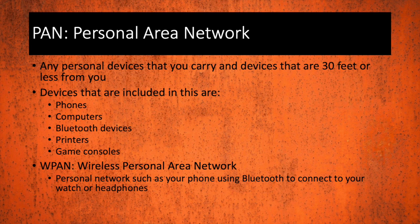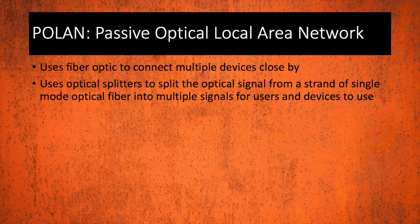POLAN is a passive optical local area network. POLANs use fiber optic cables to connect multiple devices that are close by. They also use optical splitters to split optical signals or light from a strand of single-mode optical fiber into multiple signals for multiple users and devices to use.